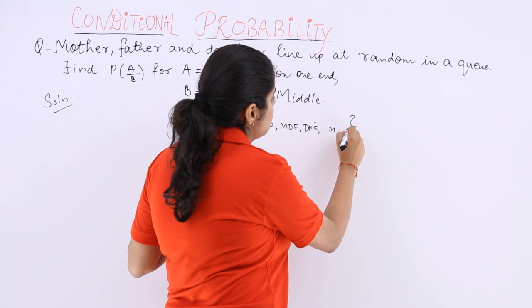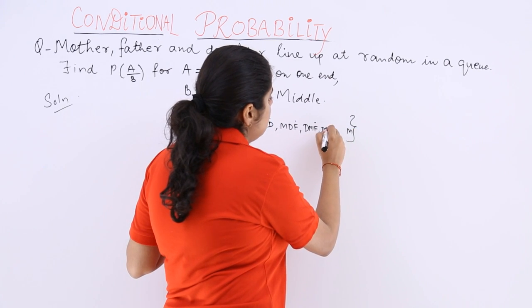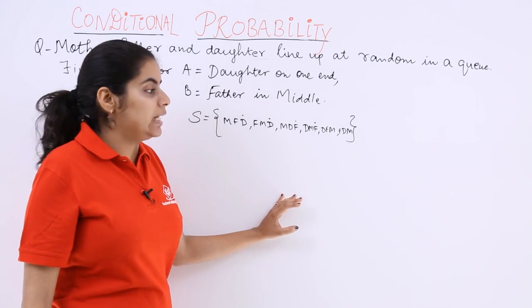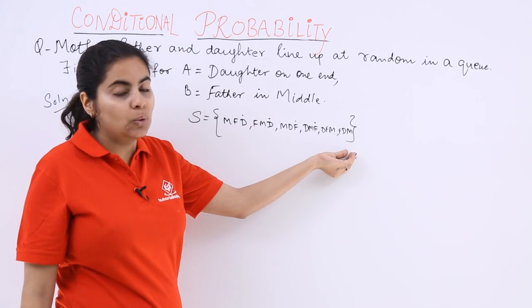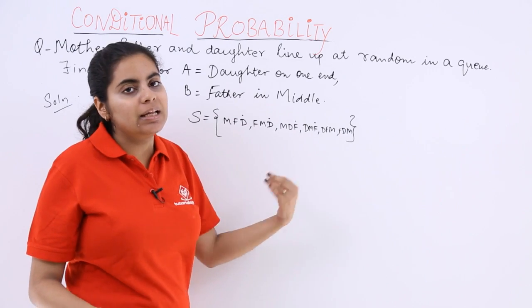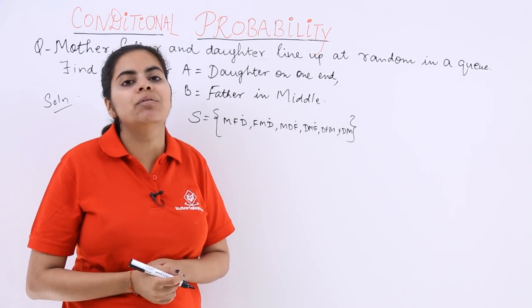So it is 2 cases, now it can be D and F and it can be F and D. So this is the case number totalling 6. These cannot be more than this because 3 people are there and they can be arranged in 3 factorial which is 6 ways.